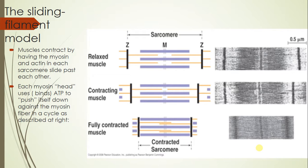The sliding filament model represents how muscles contract physiologically. Muscles contract by having the myosin and actin in each sarcomere slide past each other. In a relaxed state, when contraction occurs, the myosin pulls itself in both directions so the actin comes inward. In a fully contracted muscle cell, the myosin completely takes up the sarcomere, and here is a picture of actual relaxed, contracting, and fully contracted sarcomeres.